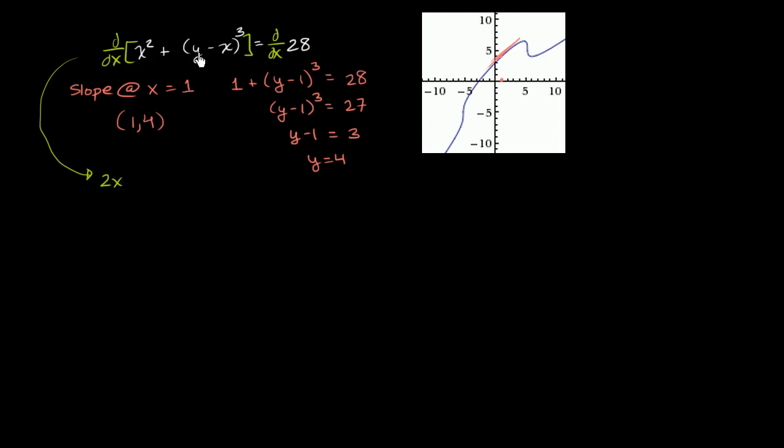And then the derivative with respect to x of something to the third power is going to be 3 times that something squared times the derivative of that something with respect to x. And so what's the derivative of this with respect to x?